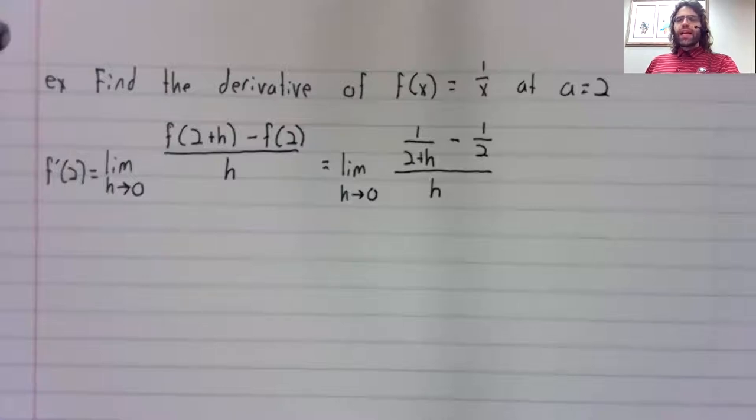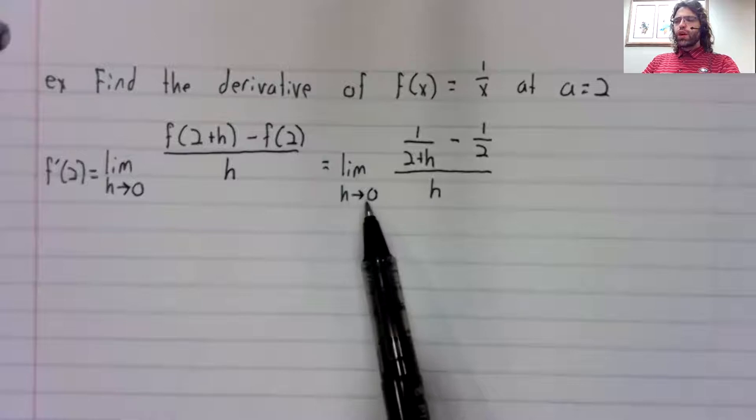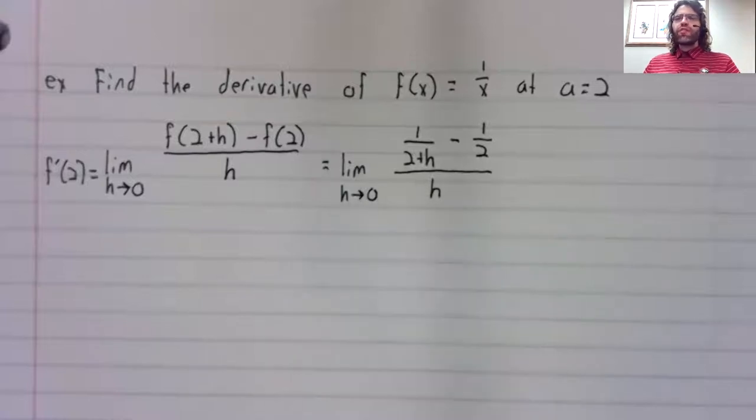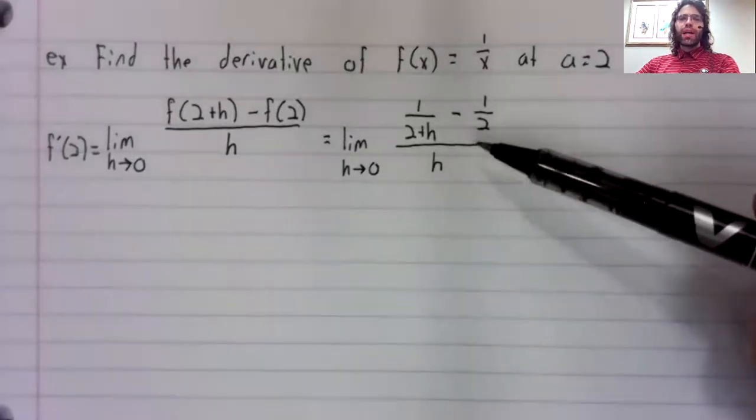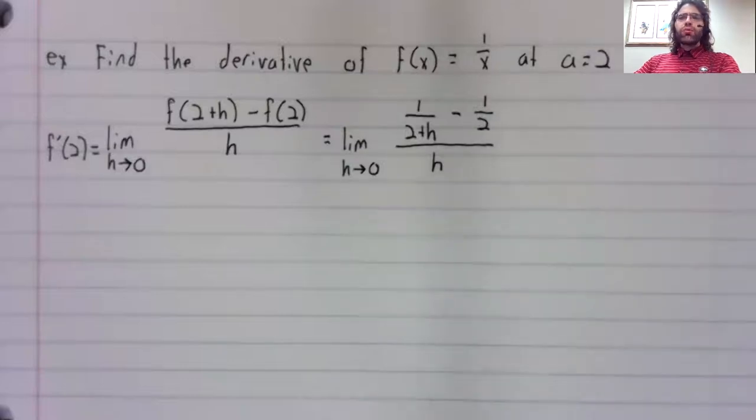We cannot use the quotient rule. Everything here is continuous. But if you plug zero in for h, you just get a division by zero error. So we have to simplify this somehow. And if you think back to when we learned how to take limits, there's no one size fits all trick for taking limits.